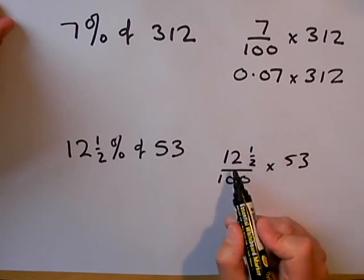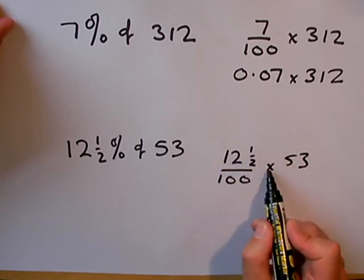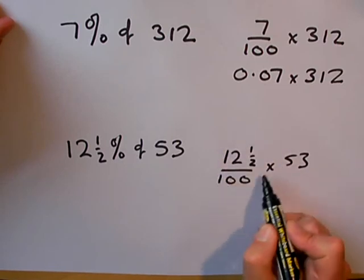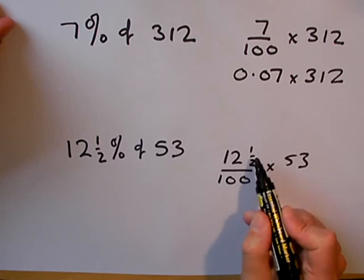Your calculator will work if you put 12.5 multiplied by 53 and then divide by 100, even though we normally don't bother writing a fraction with a fraction on top.